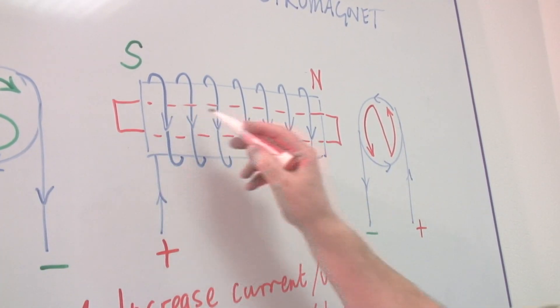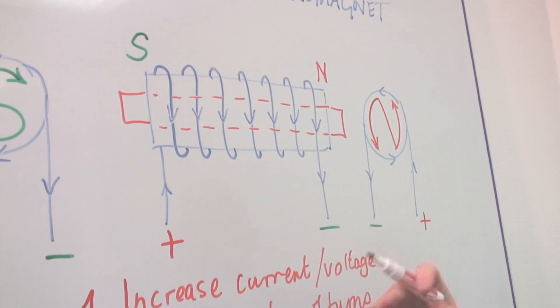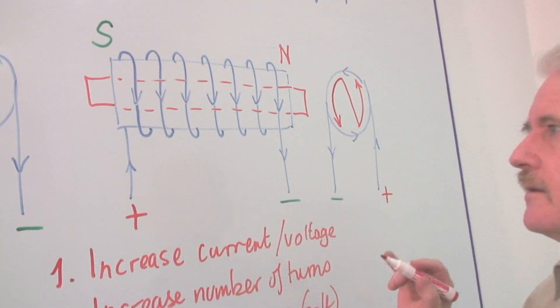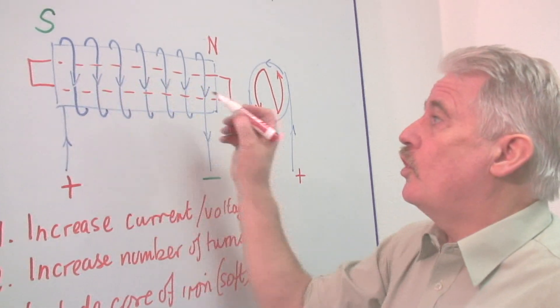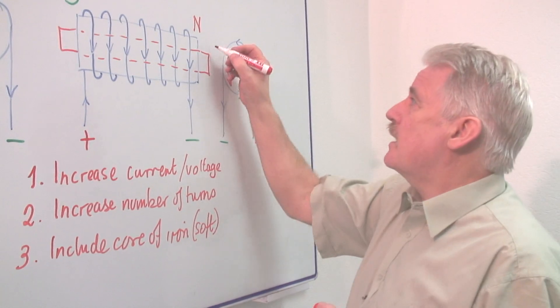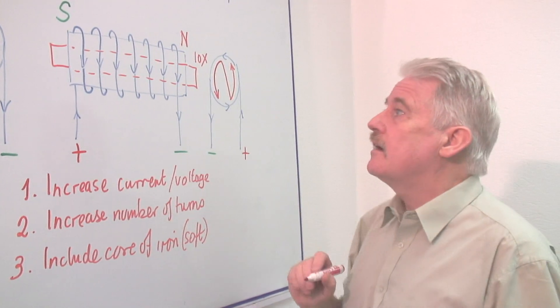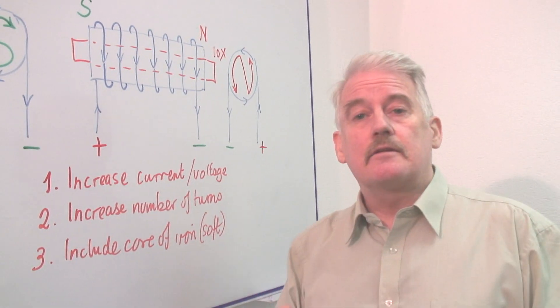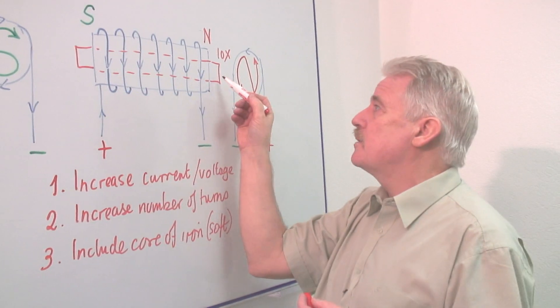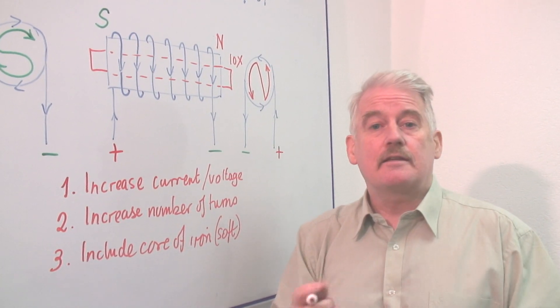This is very often laminated - it's cut into sections and insulated. But that core will increase the magnetism something like ten times, because it's easier to set up magnetism in a piece of iron than it is in air.